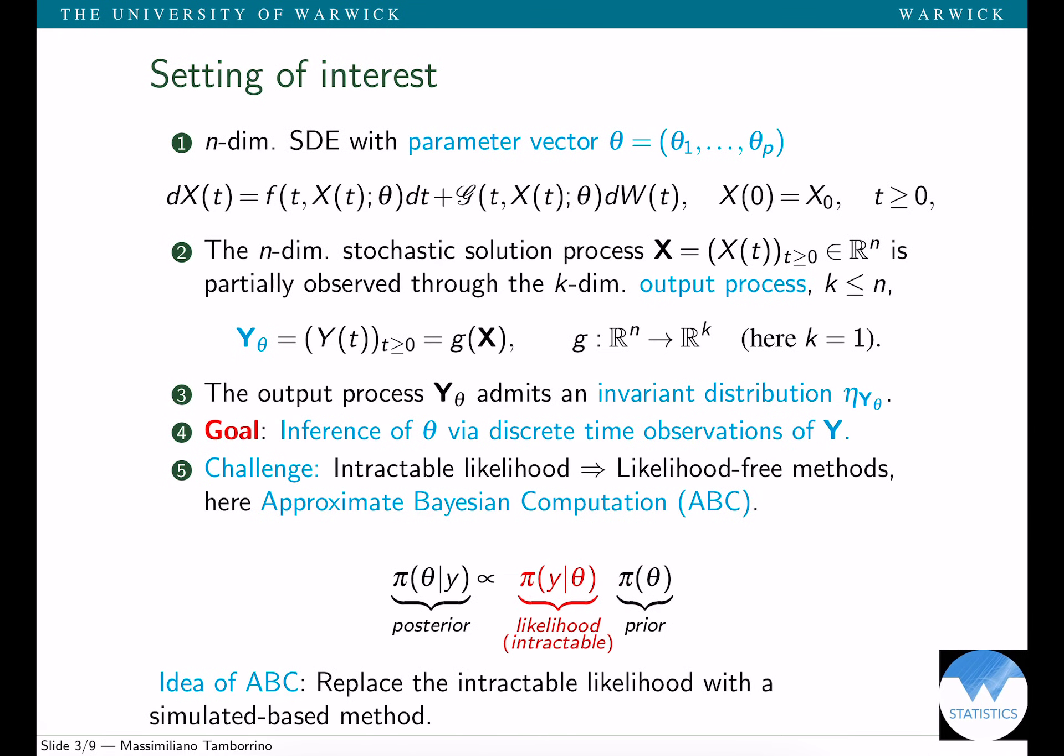Let me describe the setting of interest. We're considering an n-dimensional SDE with a p-dimensional parameter vector. We don't have direct observation of the n-dimensional diffusion process, but we observe a k-dimensional output process y that is a function g of the original SDE process. The output process admits an invariant distribution. Our goal is to perform parameter inference via discrete time measurements observation of y.